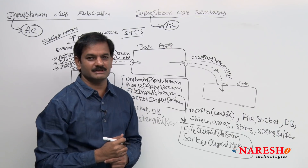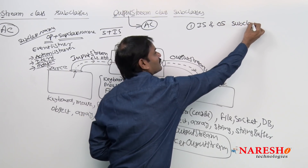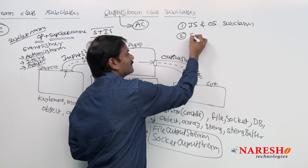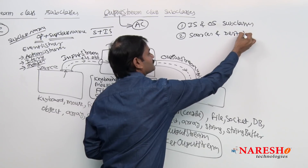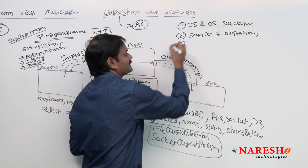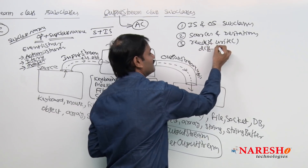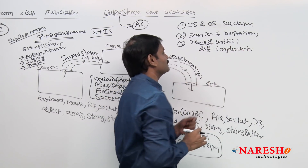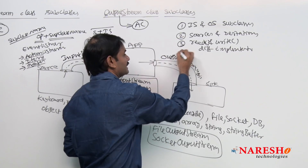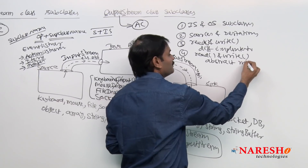Let us summarize the points discussed in this session. Point 1: we understand input stream class and output stream class contain several subclasses. Point 2: several subclasses exist based on different sources and different destinations for reading and writing data. Read and write methods contain different implementations; because they contain different implementations, we have to provide them in different classes — that is why we have several subclasses. Read method and write method cannot be implemented methods; they must be abstract methods.